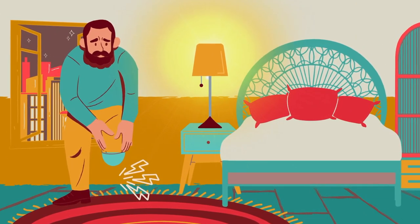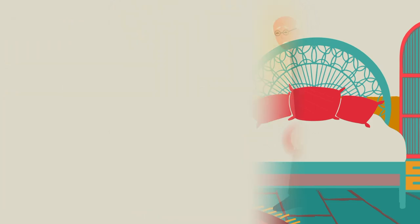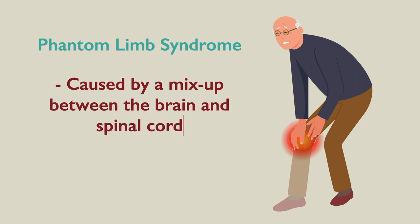However, some amputees experience pain in the part of the limb that's not even present anymore. This sensation is known as phantom limb syndrome. Experts believe phantom pain results from a mix-up in nervous system signals, specifically between the spinal cord and brain. This is an unfortunate condition and often is untreatable.